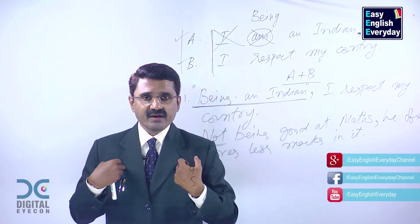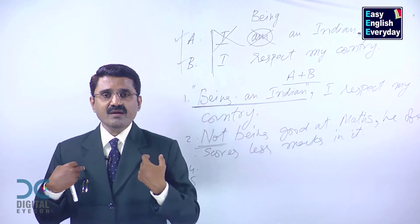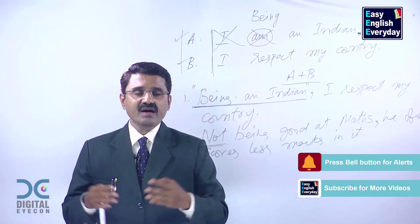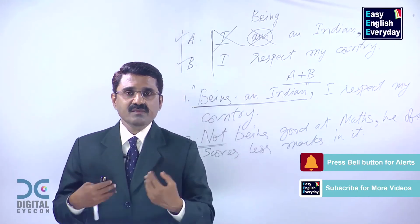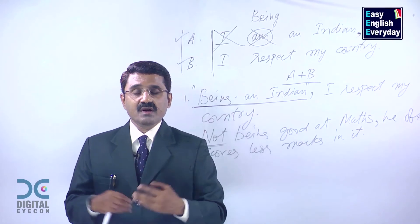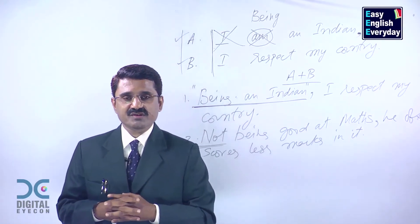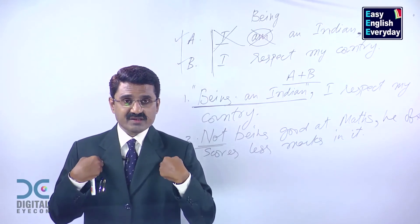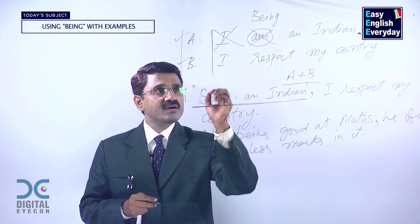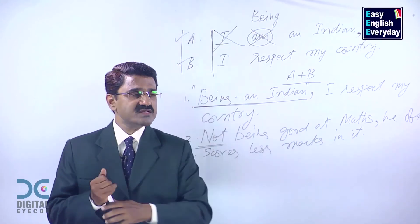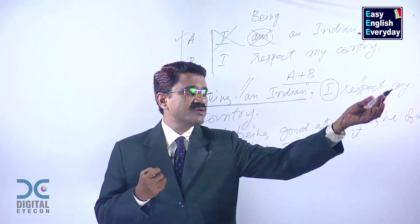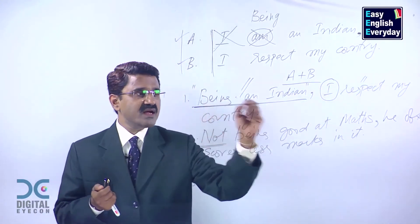I am an Indian — I respect my country. Being an Indian, I respect my country. I am a teacher, I am an English teacher, I teach English language — Being an English teacher, I teach English. I am a scientist, I invent medicines — Being a scientist, I invent medicines. I am a rationalist, I do not believe in superstitions. Remember, both qualities and both features should be about the same person: feature one — an Indian; feature two — he respects his country. This point has to be remembered.